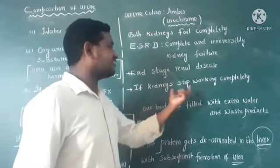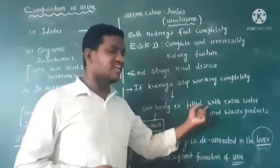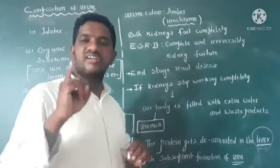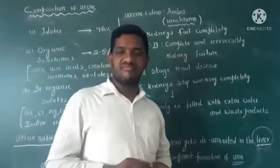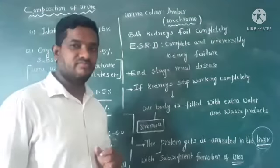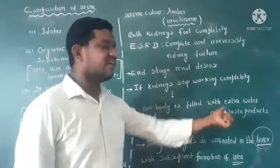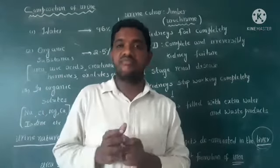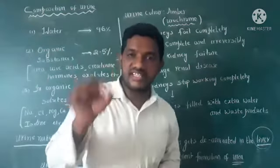If both kidneys stop working completely, our body is filled with extra water and waste products. These extra water and waste products remain in the body. This condition is called uremia. The person's body gets swelling due to this disease.